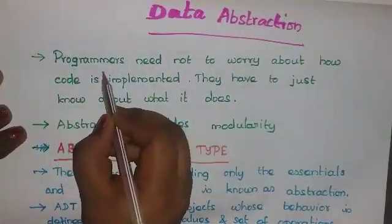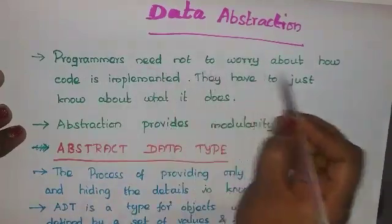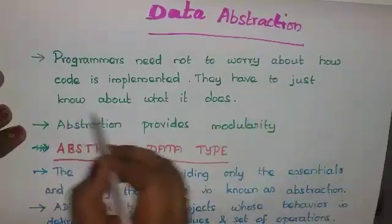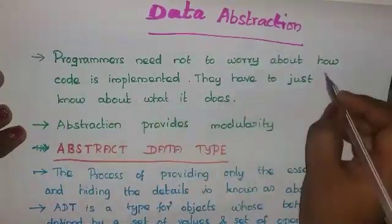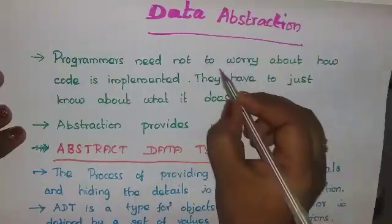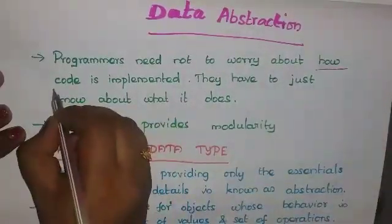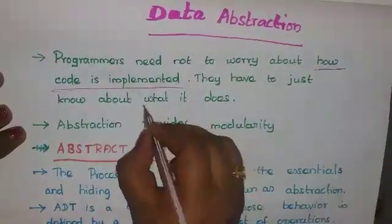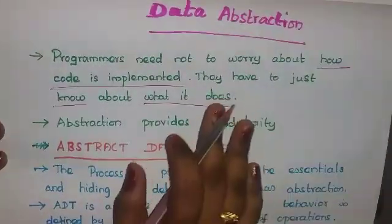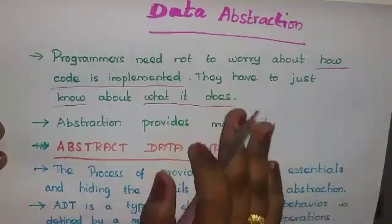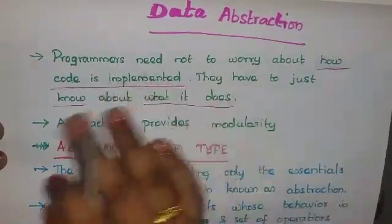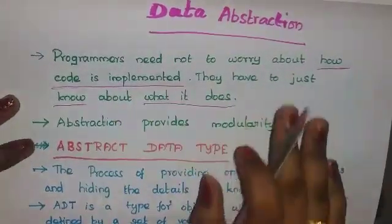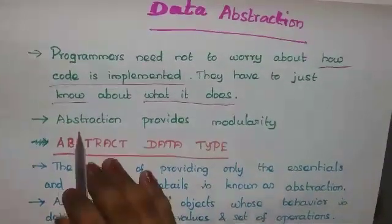Programmers need not worry about how code is implemented — they just need to know about what it does. Abstraction just wants to perform the operations and it doesn't care about how the code is implemented; it just knows what it does.